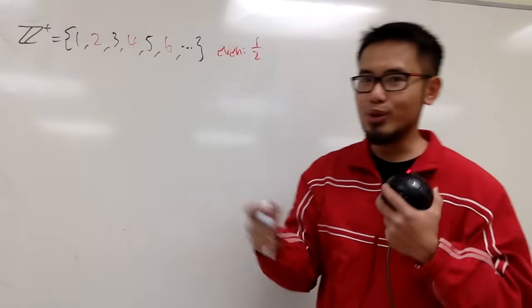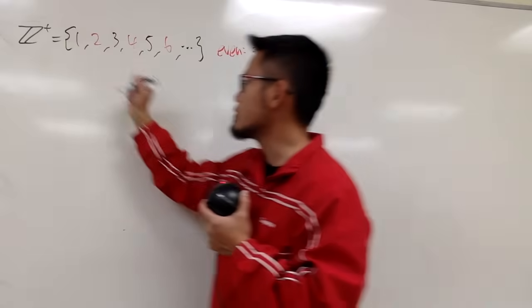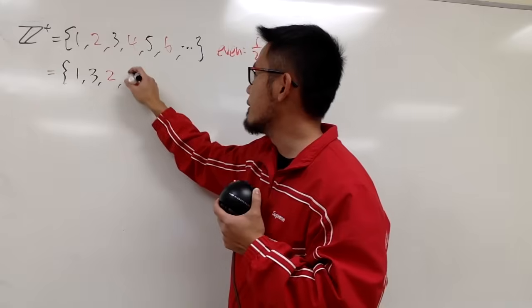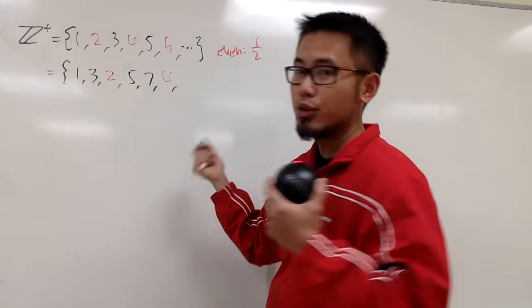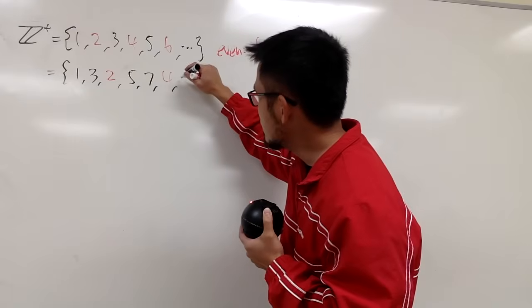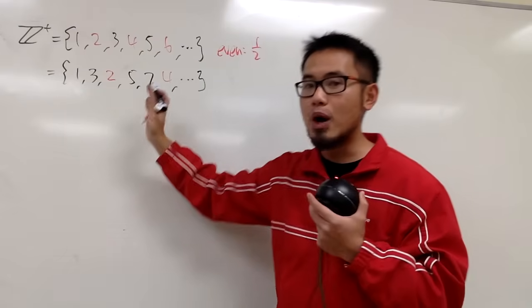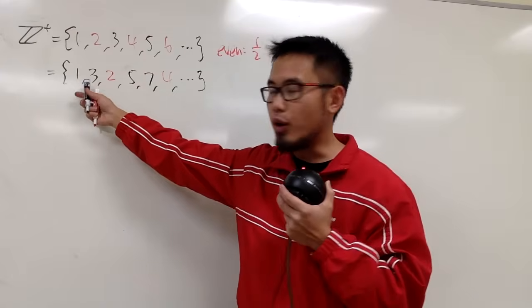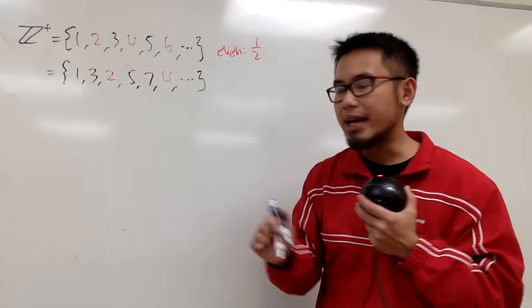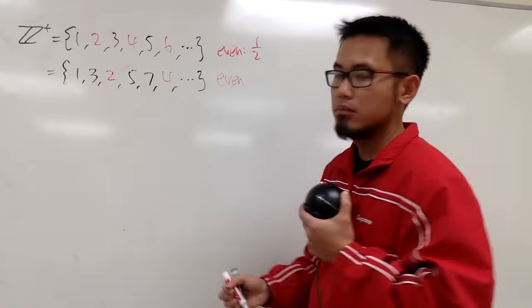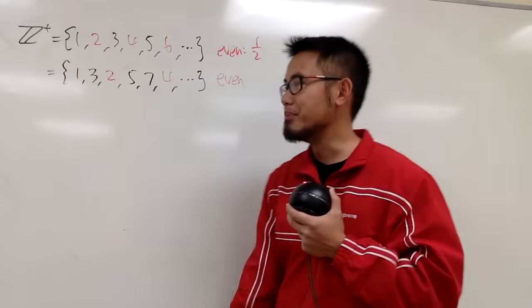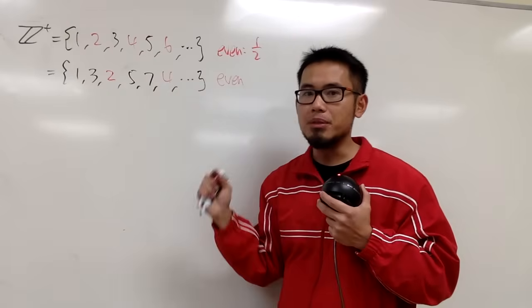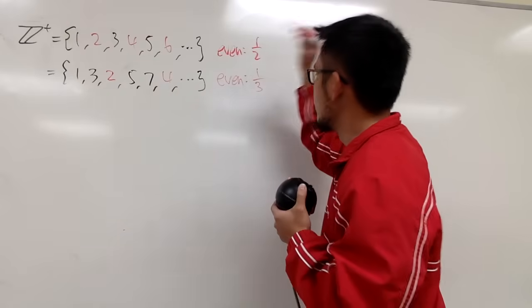However, this is not the only way to arrange the set of positive integers, because you can also do it this way. You can also put this down as 1, 3, 2, and then 5, 7, 4, and so on. This is one way to list out all the positive integers. And if you look at the set of all the integers right here as how it is, it seems like the ratio of the even numbers is equal to 1/3, because every three numbers, we have an even number inside of them. Every three numbers, only one of them is even. So the ratio of the even numbers is equal to 1/3.